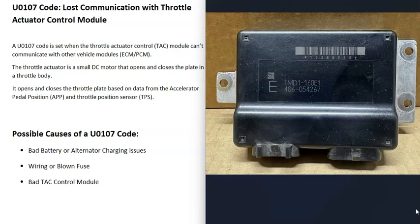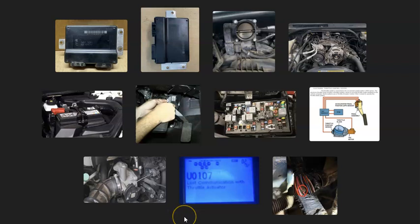That's basically it — just a basic overview of how you go about fixing a vehicle with a U0107 code. If you have anything to add, please comment down below. If you have any questions, ask me and I'll try to answer them.